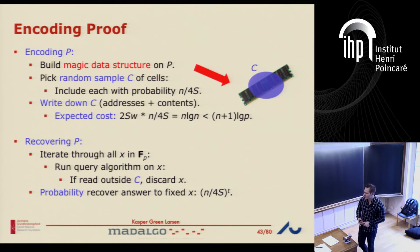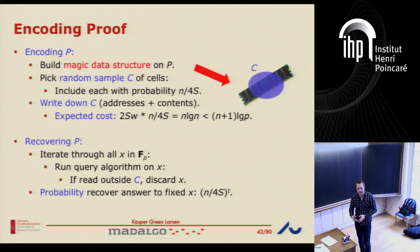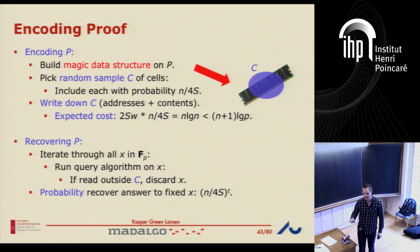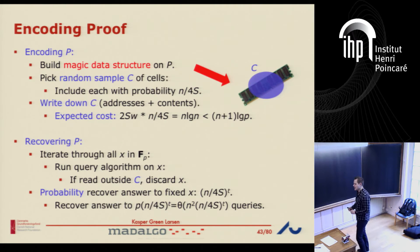It's a very simple decoding algorithm — just run all the queries. If I look at one of these queries, the probability that I can actually run the simulation to the end: it reads t cells if the query time is t, and each of them is included in the sample independently with probability n over 4s. So I get the answer back with probability (n/4s)^t — that's the probability I get this answer to one query. In expectation, there are p different queries, each recovered with probability (n/4s)^t. Since p = n², I will see n² × (n/4s)^t queries recovered by this process in expectation.